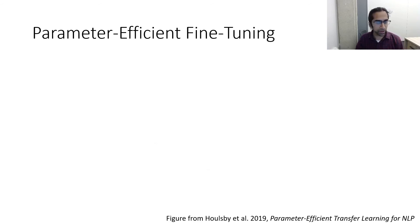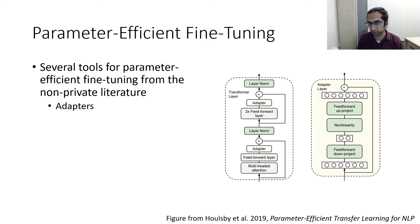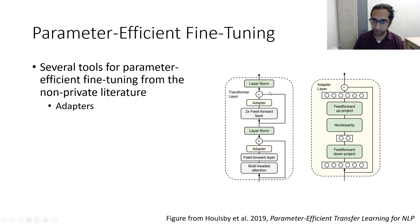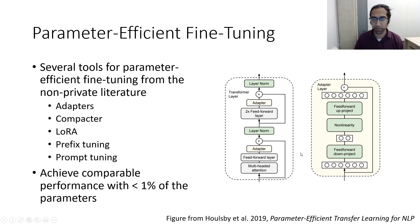One way to solve this is using parameter-efficient fine-tuning methods recently introduced in the non-private literature. The most popular is adapters, introduced by Houlsby et al. Rather than fine-tuning all parameters of the model, you introduce new layers called adapters which have far fewer parameters, and fine-tune only those. Other approaches include Compacter, LoRA, prefix tuning, and prompt tuning. The bottom line is that any of these methods achieves comparable performance to full fine-tuning non-privately while using fewer than one percent of the total parameters.